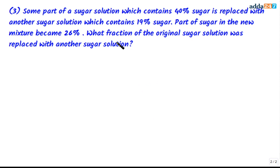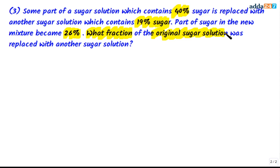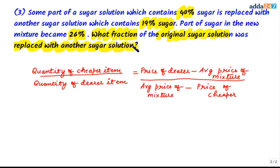Let's take one more example. Some part of a sugar solution containing 40% sugar is replaced with another sugar solution containing 19% sugar. The part of sugar in the new mixture becomes 26%. We need to find what fraction of the original sugar solution was replaced. The dearer item will be the solution with a higher percentage of sugar (40%), and the cheaper item will be the one with a lower percentage (19%).